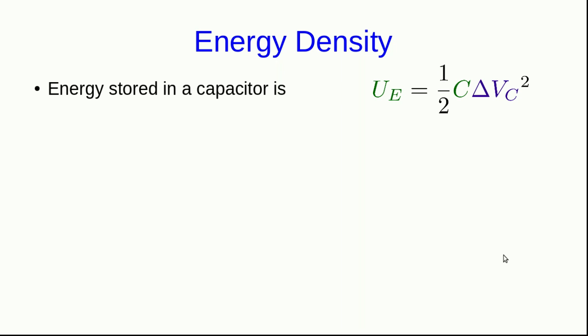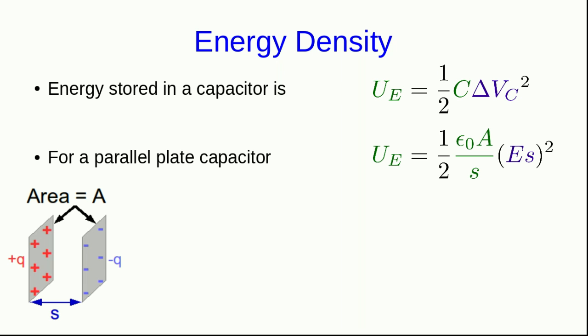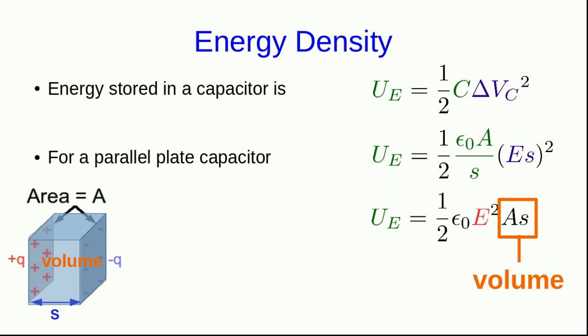So we've just seen that when the potential difference across a capacitor is delta V_C, the energy stored in the capacitor is given by this formula. And for a parallel plate capacitor, if we just insert the expression for the capacitance in terms of its plate area and plate separation and the relationship between the potential difference across it and the electric field strength inside, then we get this expression. A little bit of rearrangement and cleaning up with cancellations of factors of S yields this. And what's interesting about this is that it has this AS in it. Notice what that is. That's the volume of the space in between the plates.